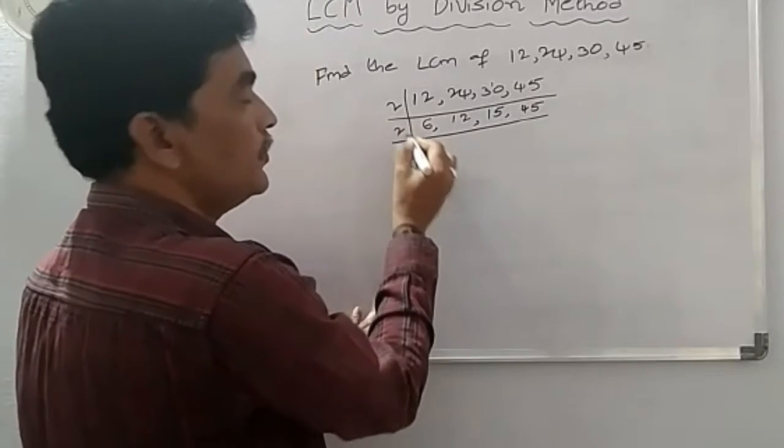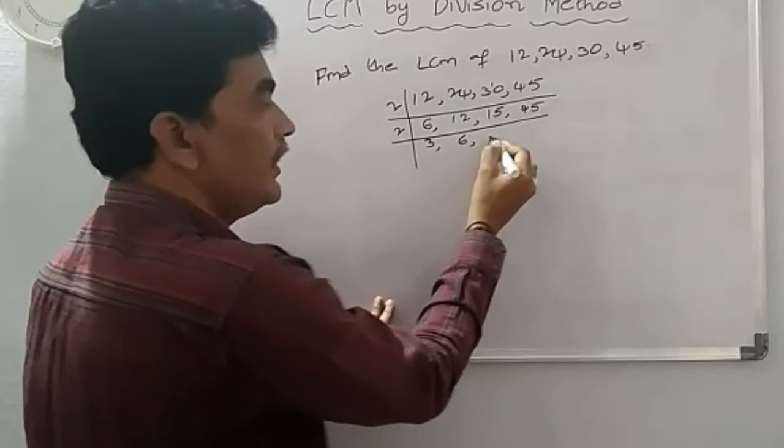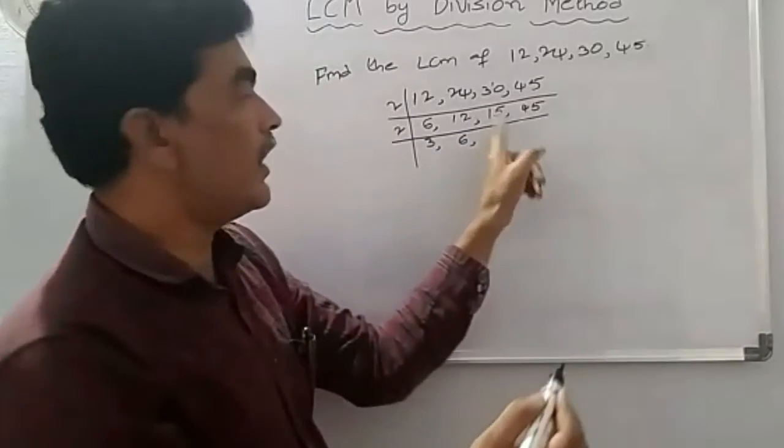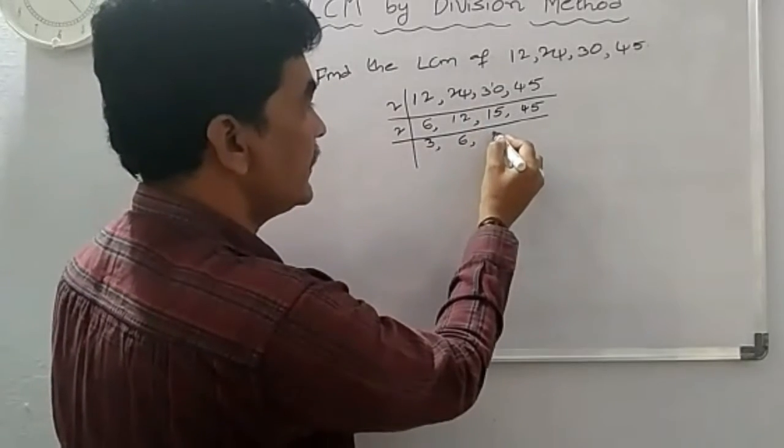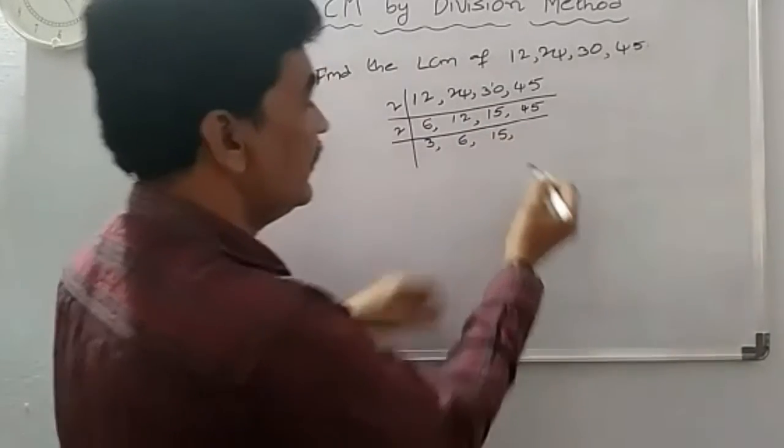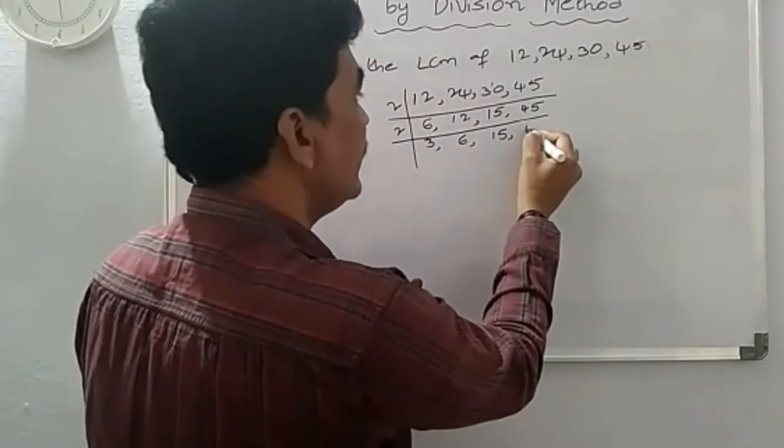Again, 2, 2, 3's are 6, 2, 6's are 12. 15 is not divisible by 2, so write down as this, 15. 45 also not divisible by 2, then write only as this.